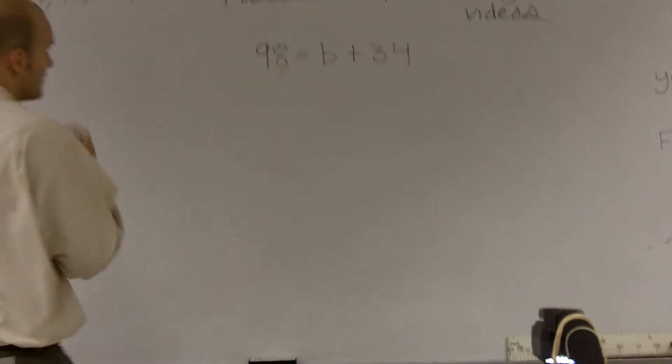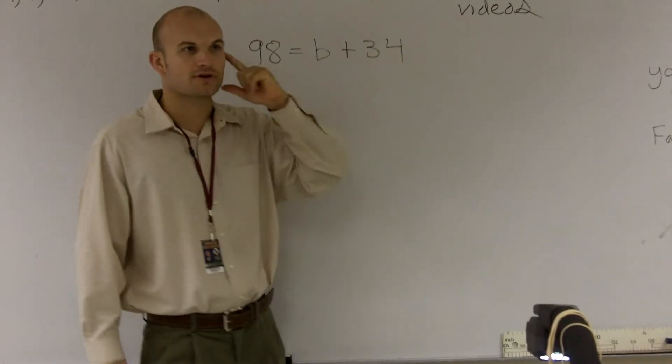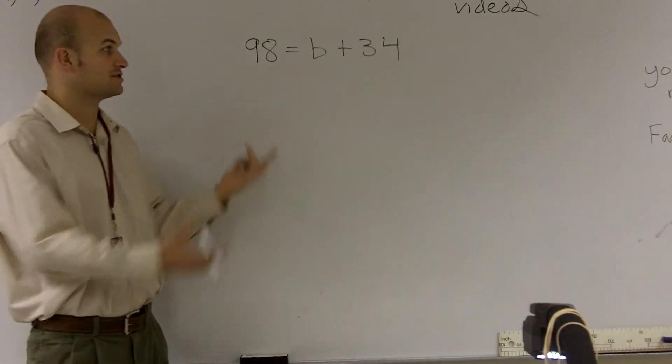Sweet, really quick. All right, for this problem, what we're looking at is 98 equals b plus 34. So what they want us to do is solve for a value of b, which is our variable. We don't know what b is.